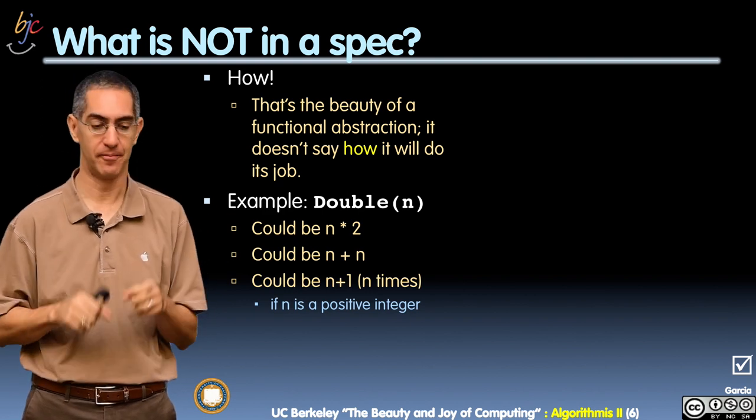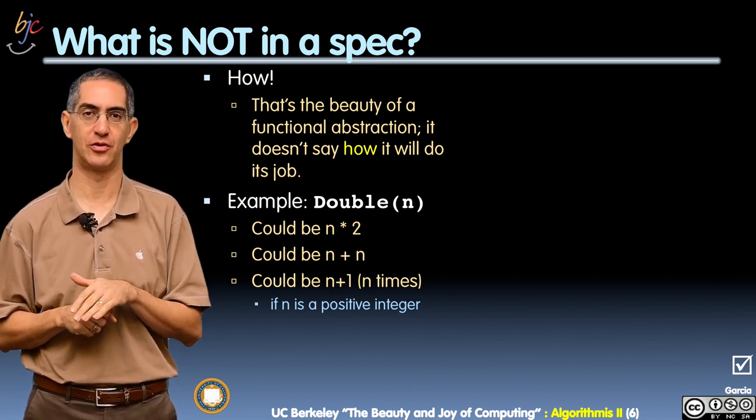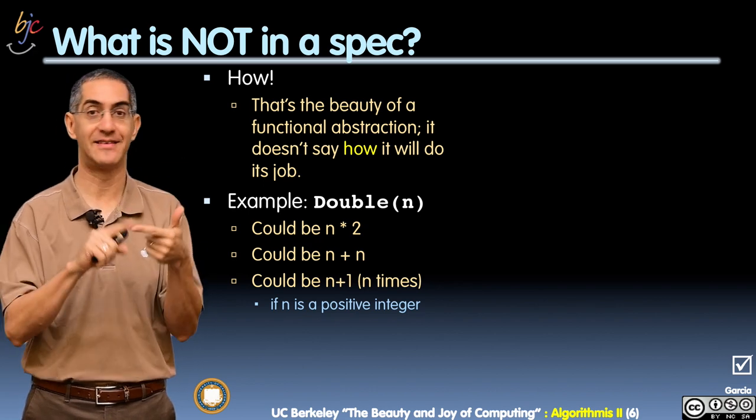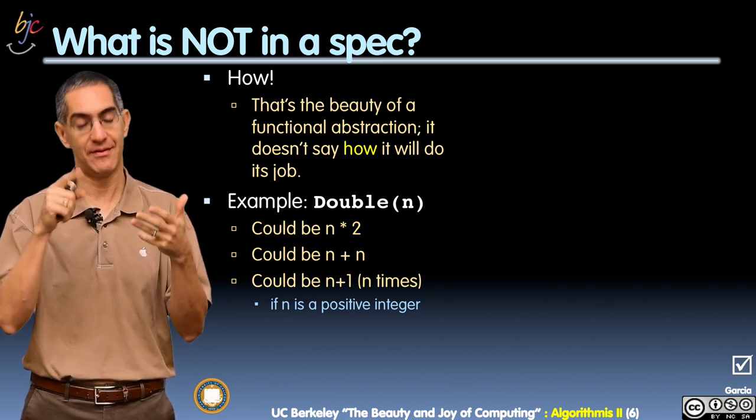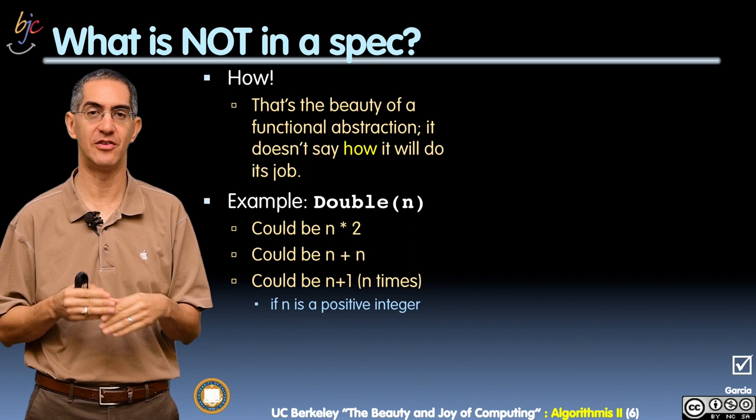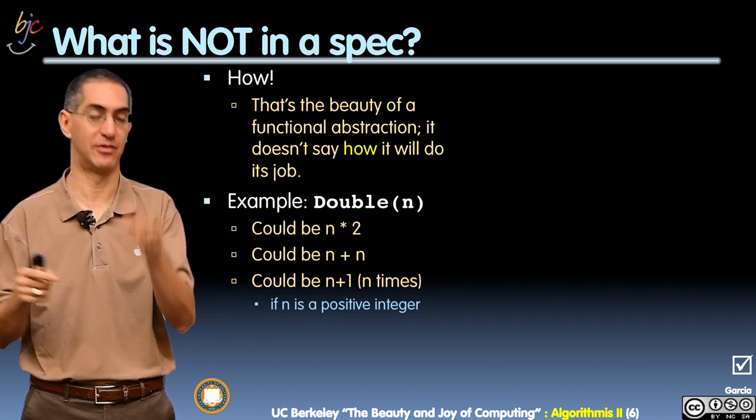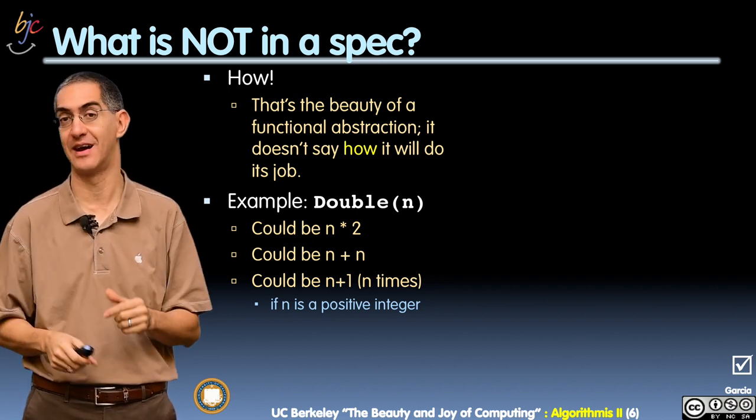So for example, double could be, and I did this last lecture, this could be n times 2, n plus n, or if it's a positive integer, it could add 1 to itself n times. So it starts with n and adds 1 to itself n times.